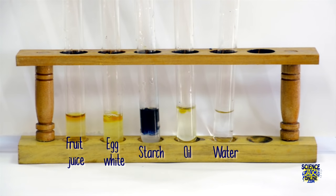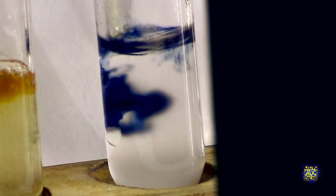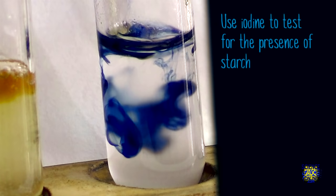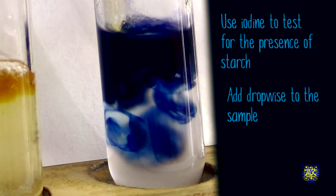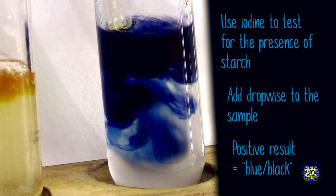We continue adding this to all of our samples and amongst all of them starch is the only one that shows a positive result. So to summarize, we use iodine to test for the presence of starch. You add it dropwise to each of your samples and it turns blue-black if starch is present.